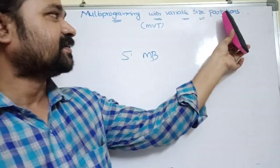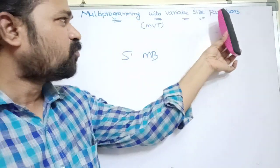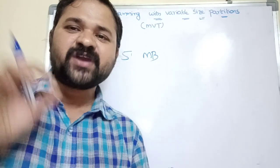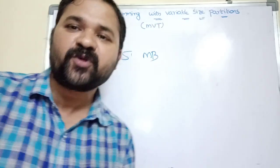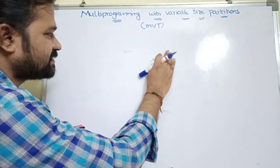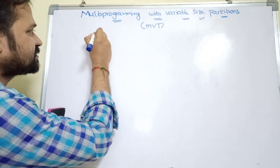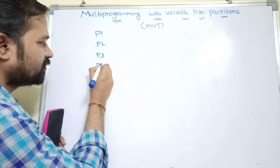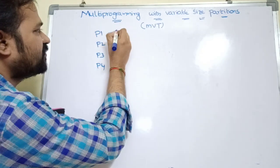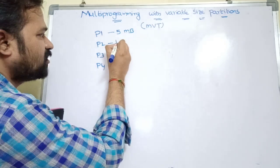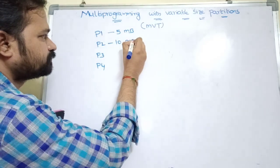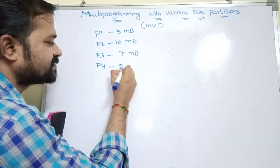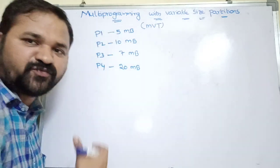Let's take an example. We have four processes: P1, P2, P3, and P4, where the size of P1 is 5 MB, size of P2 is 10 MB, size of P3 is 7 MB, and size of P4 is 20 MB. These are the four processes waiting for execution.